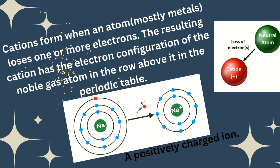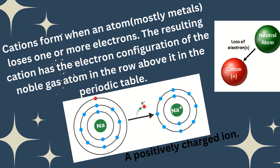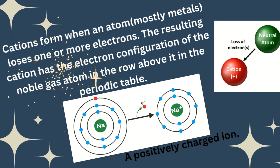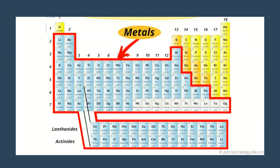Cations are positively charged ions. Cations form when an atom, mostly metals, loses one or more electrons. The resulting cation has the electron configuration of the noble gas atom in the row above it in the periodic table. Metals are located in specific positions in the periodic table.